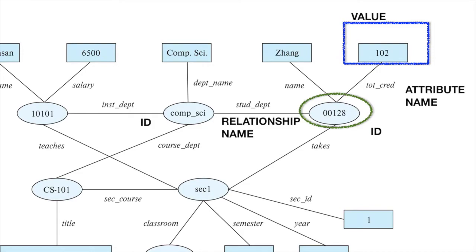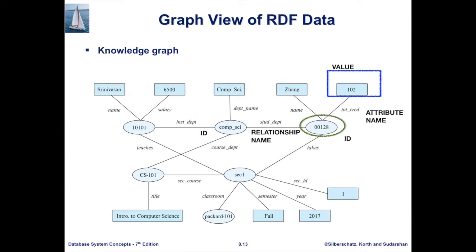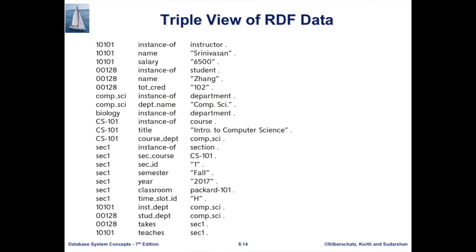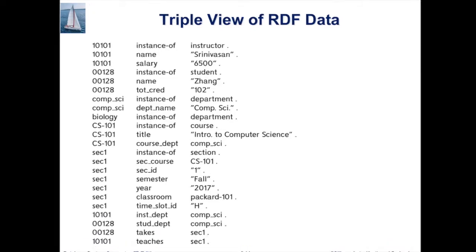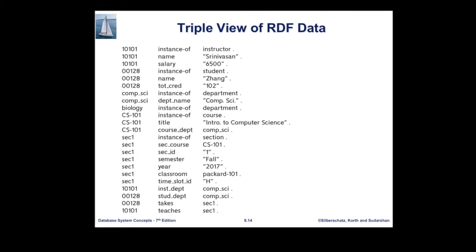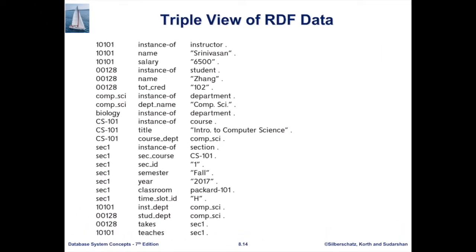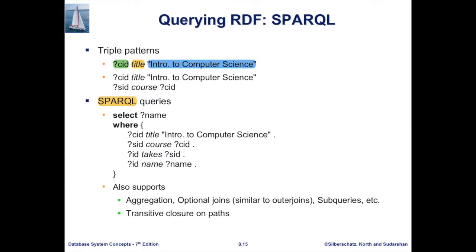Since this is a graph, and we can represent a graph using an edge list, we can represent the RDF using the list of all triples. In this example, every edge in the graph appears in this triple view of the RDF graph, except for some special triples that specify that a specific ID is an instance of a certain entity — for example, '10101 instance_of instructor' to specify that ID is an instructor ID.